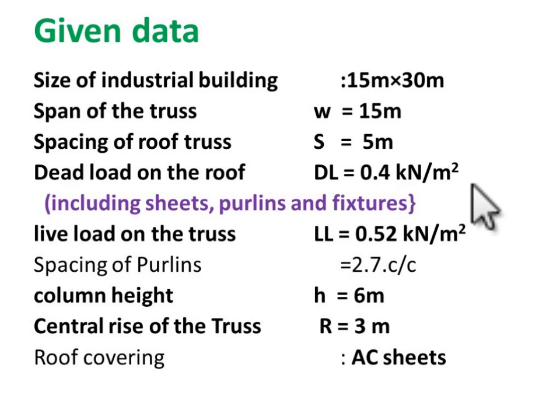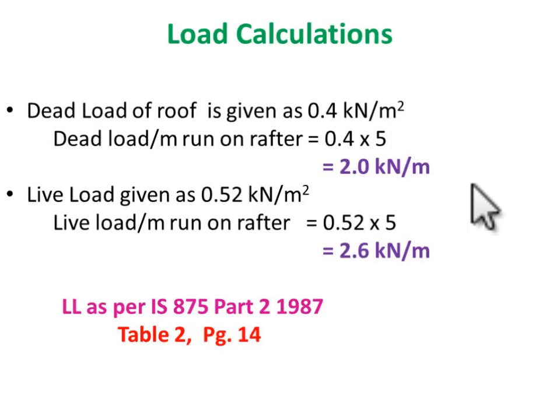To summarize the data: the building plan is 15 meters by 30 meters, the width of the truss is 15 meters, spacing of roof frames is 5 meters, dead load is 0.4 kN/m², live load is 0.52 kN/m², purlin spacing is 2.7 meters, column height is 6 meters, and central rise of the truss is 3 meters. For load calculations, dead load per meter run is 0.4 × 5 = 2 kN/m. For live load: 0.52 × 5 = 2.6 kN/m.